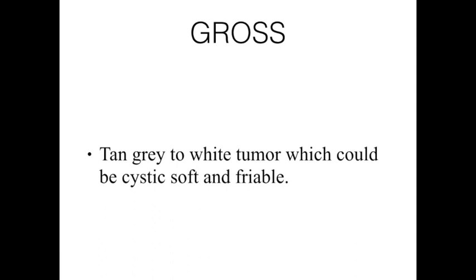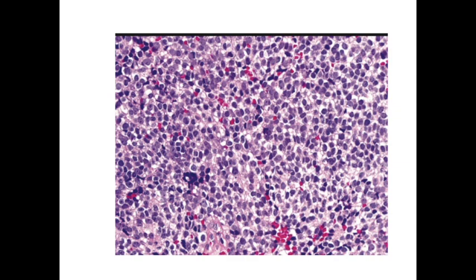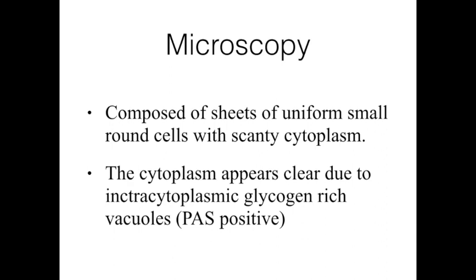Grossly, the tumor is tan-gray to white, and could be soft, cystic, and friable. In microscopy, you will find sheets of uniform small round cells with scanty cytoplasm with alternating small and dark areas. The cytoplasm in some areas also appears clear due to the presence of glycogen. The special stain used to confirm glycogen is periodic acid-Schiff, commonly called the PAS stain.